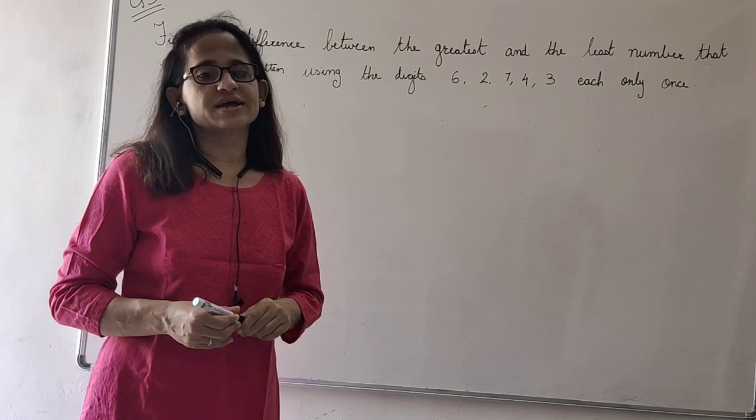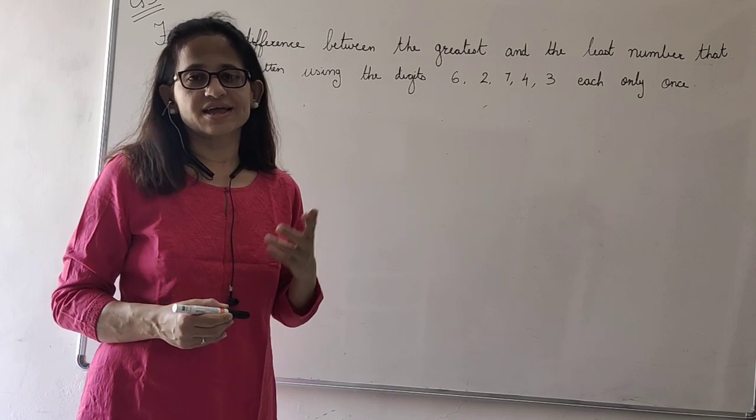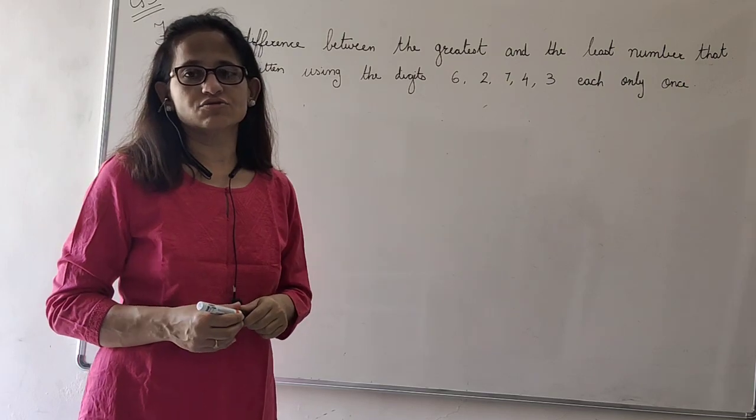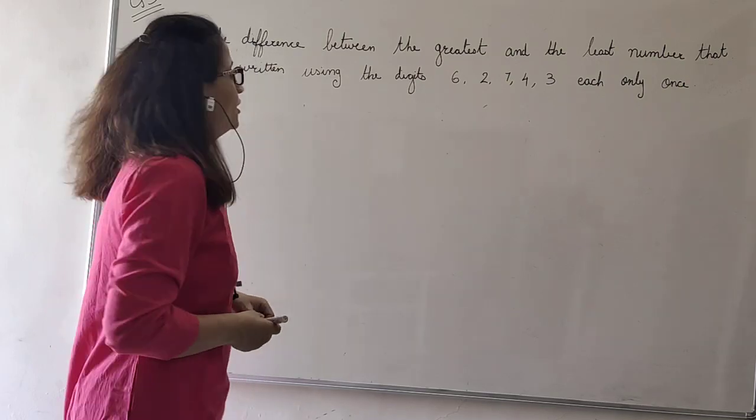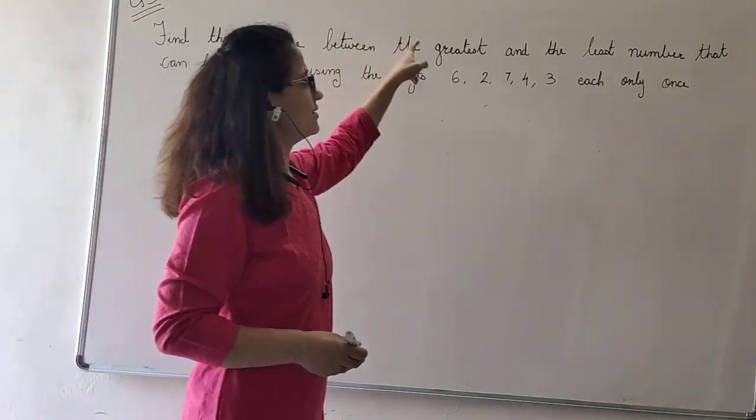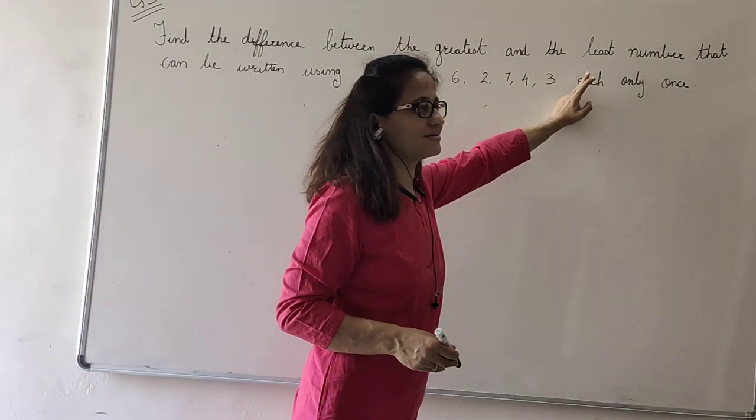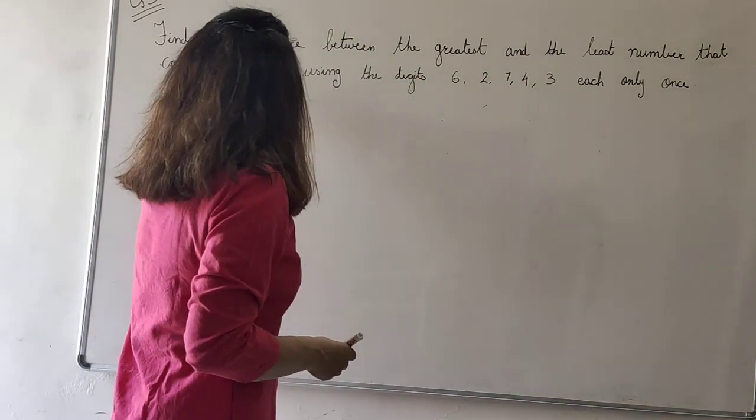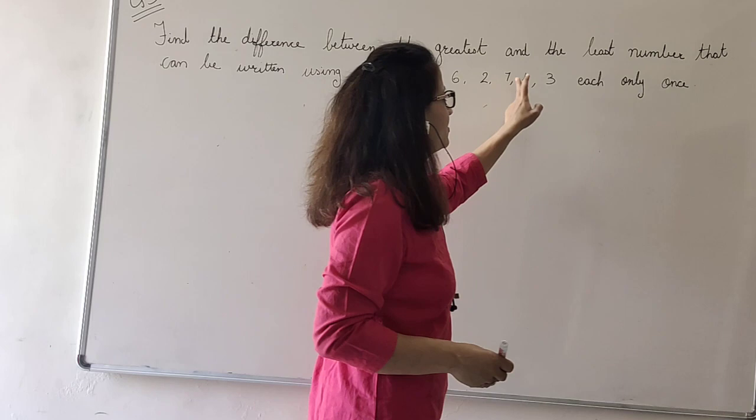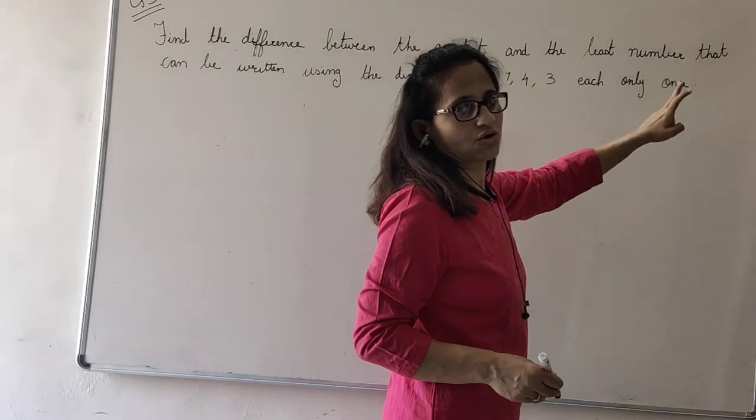Hope you get the answer correctly, or if you have doubts you could clear them through this. The question is: find the difference between the greatest and the least number that can be written using the digits 6, 2, 7, 4, 3 each only once.